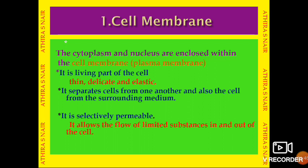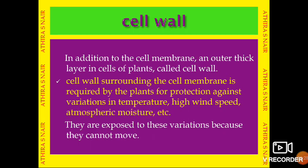The cell membrane is also called plasma membrane or plasmalemma. It is a living part of the cell and it is thin, delicate, and elastic. Plasma membrane separates cells from one another and also the cells from the surrounding medium. Plasma membrane is selectively permeable — that is, it allows the flow of limited substances in and out of the cell.